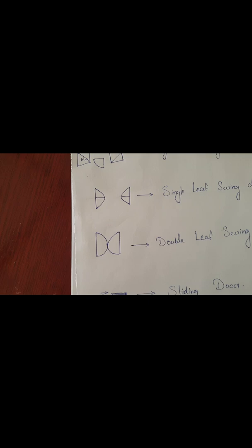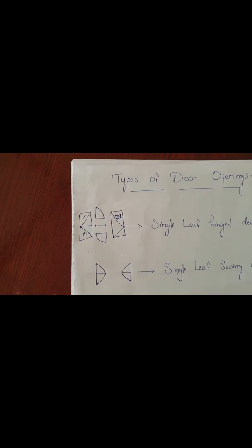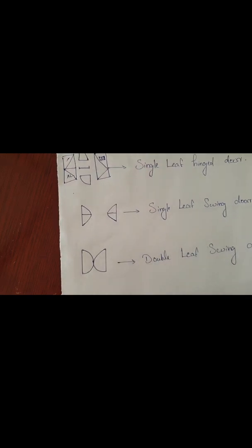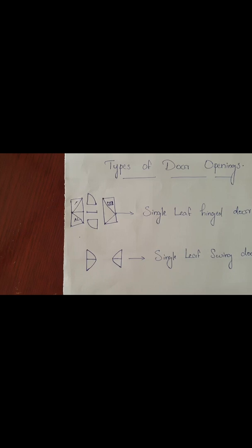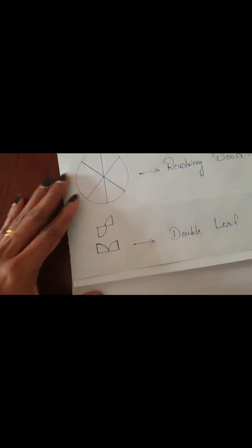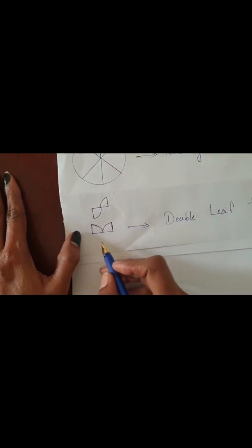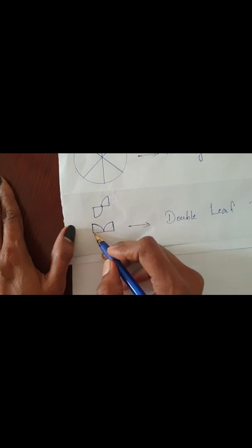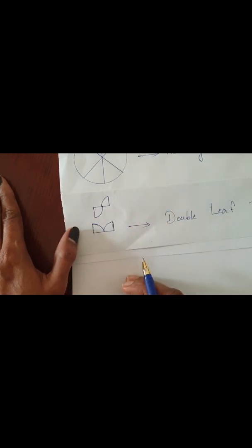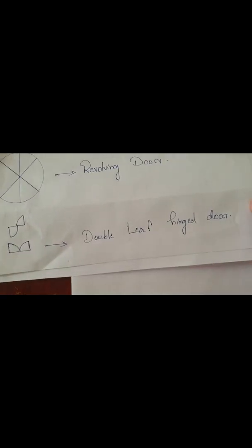A hinged door we can open in one direction only — inward or outward. A swing door we can open in both directions: inward and outward. Single leaf and double leaf swing doors are coming. This is a double leaf swing door. In hinged door also, two types are coming: single leaf and double leaf. A double leaf hinged door — we can open one door in inward direction, one in outward direction, or both in inward direction or both in outward direction. In the plan, it is coming like this.